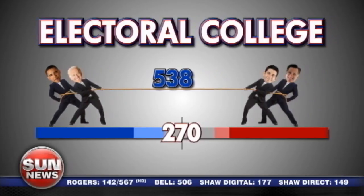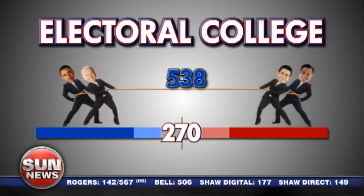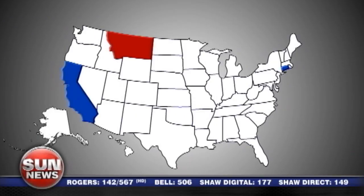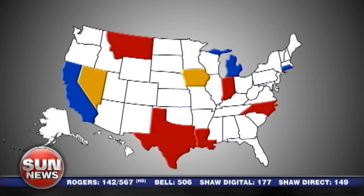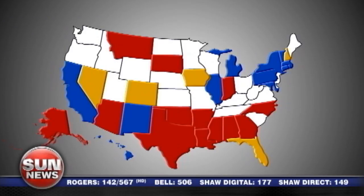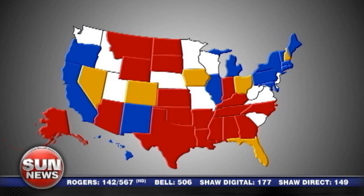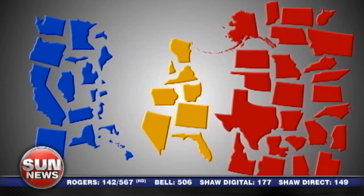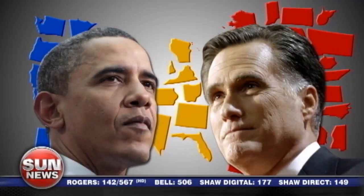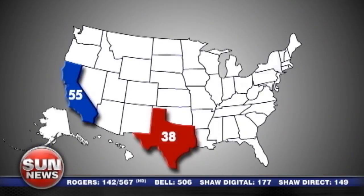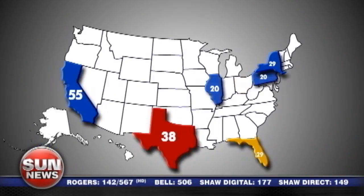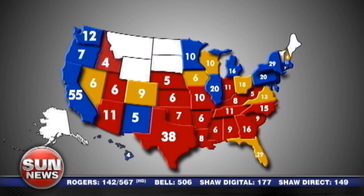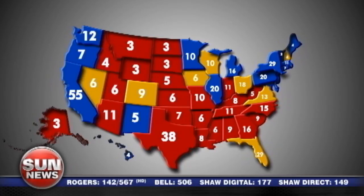Remember that number 270? Well, that's a majority of 538. The candidate who wins the state, even if it's just by one vote, is the candidate that state supports, and all of the state's electoral college votes go to that person. As far as power to elect a president goes, this is what the U.S. really looks like — it's literally winner-takes-all.